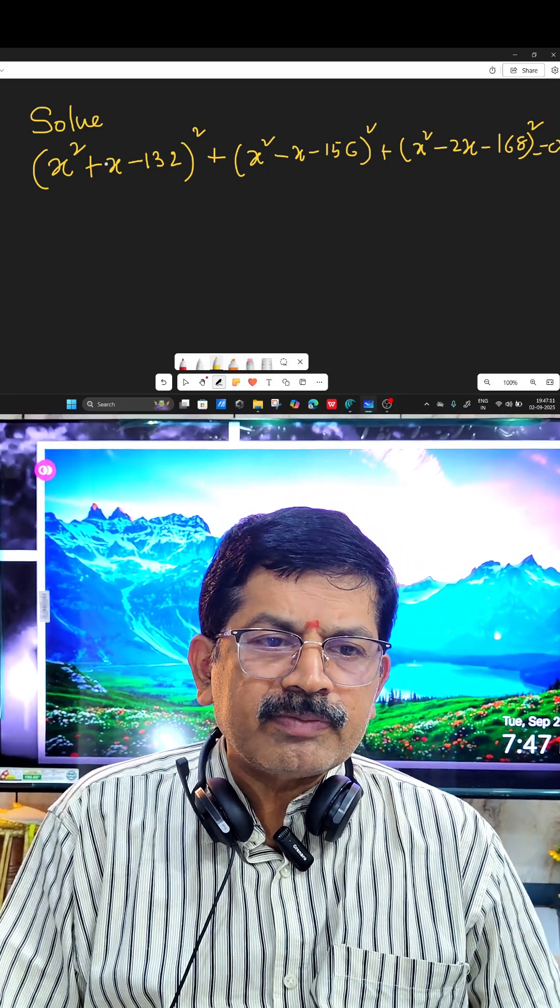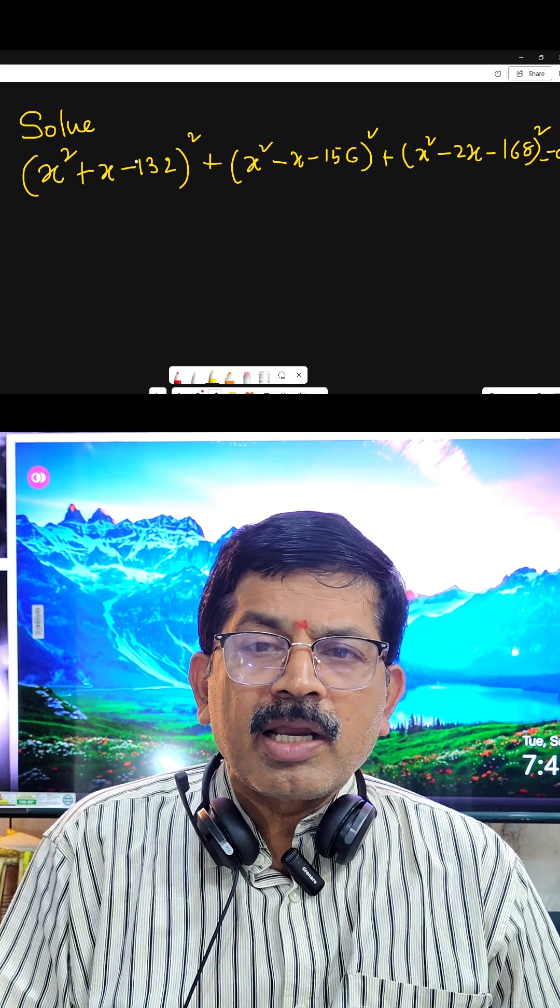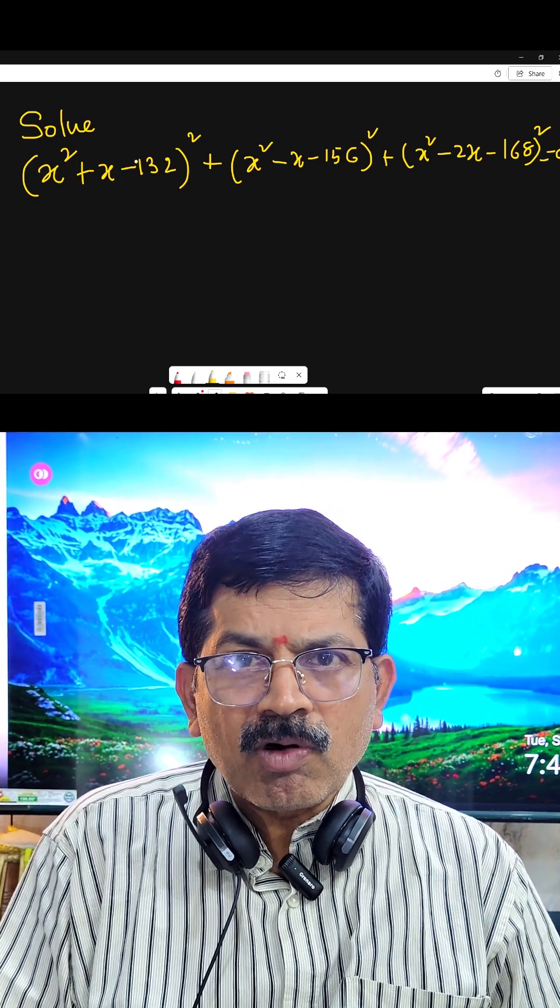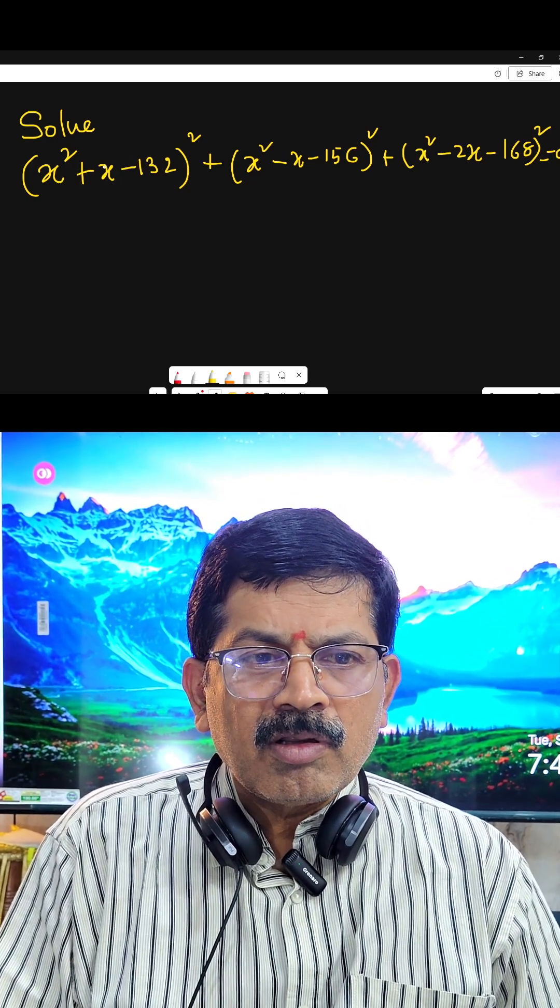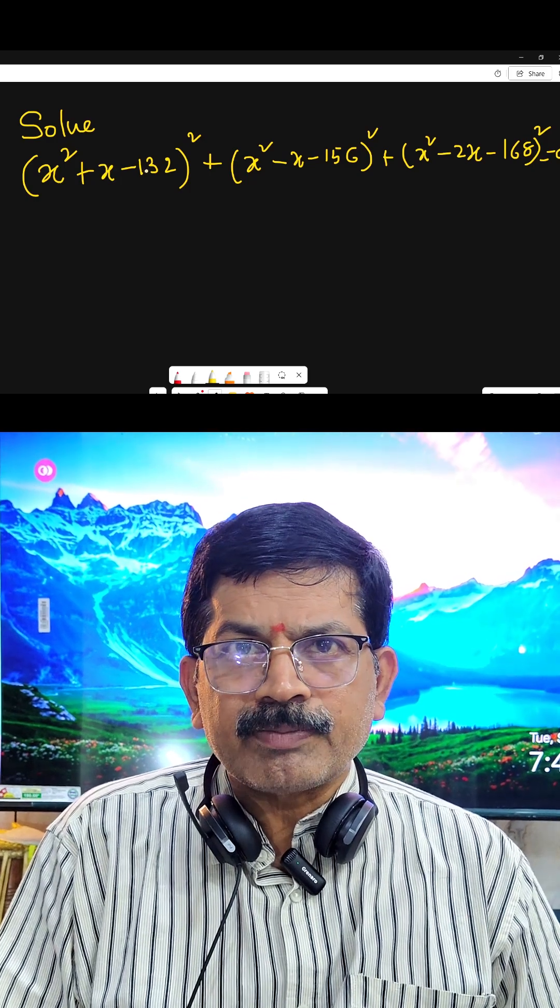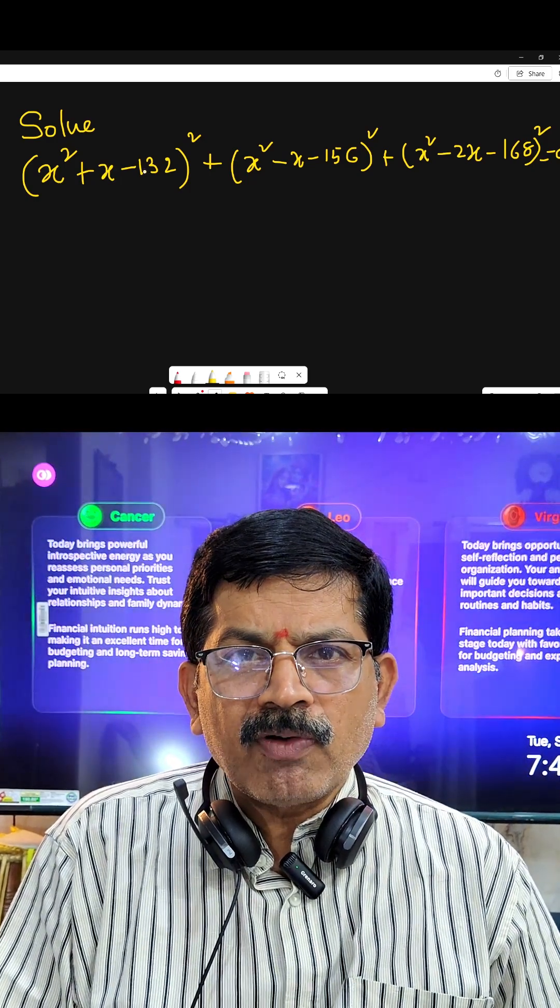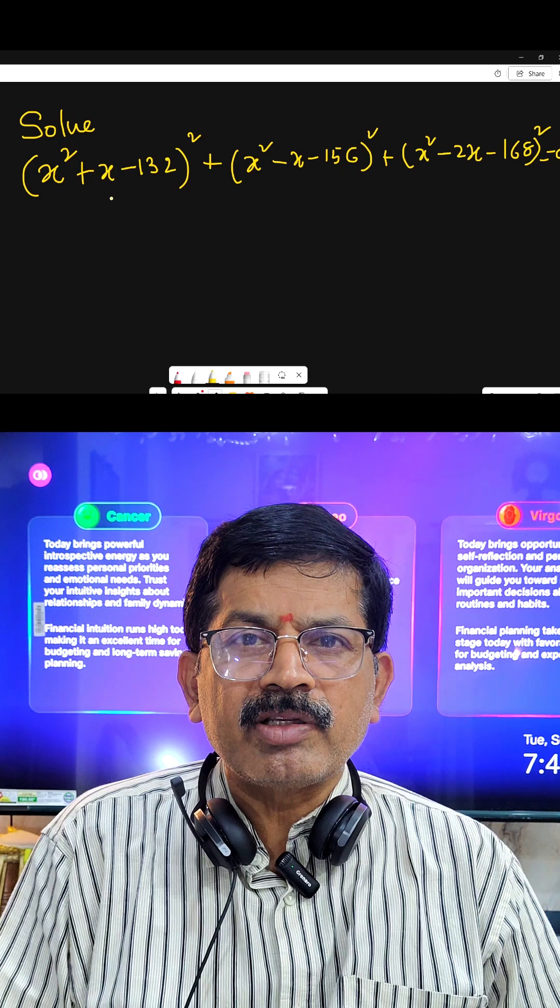It seems to be very difficult. Why? Because here quadratic equation whole square is there, so you will get a fourth degree equation. While solving fourth degree equation, so many things we have to use.